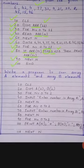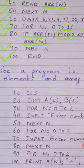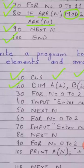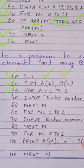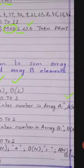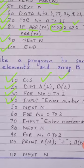اگلا program ہے: write a program to sum array A elements and array B elements۔ ایک array A اور ایک array B ہے، ان دونوں کے elements کو plus کرنا ہے۔ Dim statement میں دو arrays declare کر سکتے ہیں: dim a(2), b(2)۔ دونوں کے 3 elements ہیں، 0 سے 2 تک۔ Line number 30: for n is equal to 0 to 2۔ Input statement use کر رہے ہیں — input 'enter a number in array a', a(n)۔ اس loop سے array A fill ہوگا۔